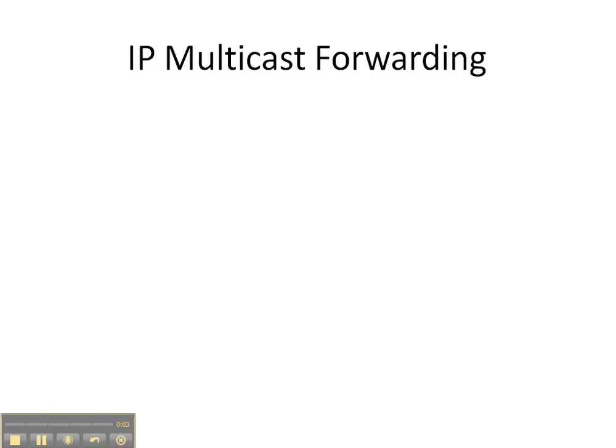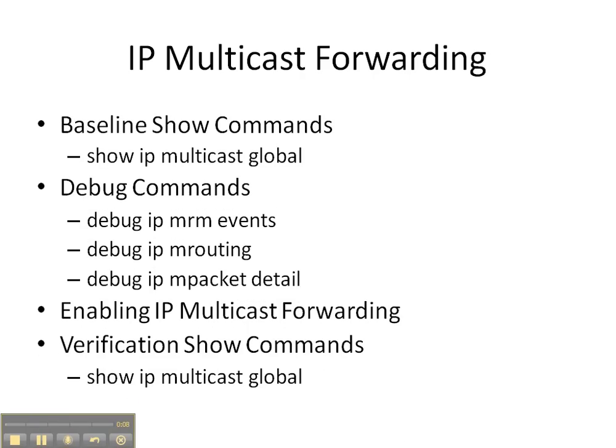Welcome everybody to this video cheat sheet where we're going to be enabling IP multicast forwarding on one of the routers in our network. We're going to start off with the baseline show command of 'show IP multicast global' to see if multicast is enabled on the router. Then we're going to implement three debug commands, and finish up with a verification show command to see how things have changed — hopefully we'll see that multicast is then enabled on our router.